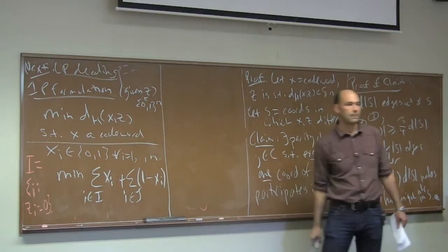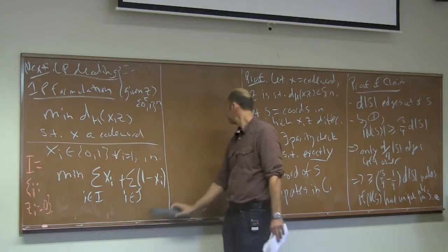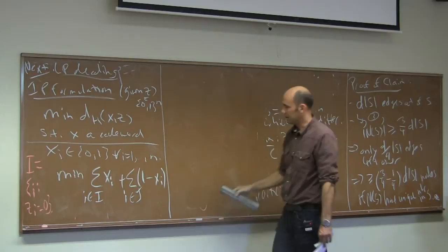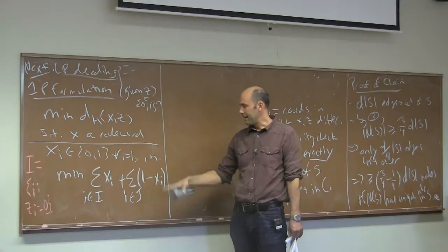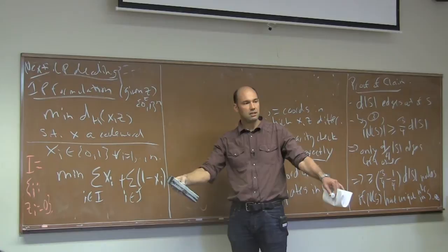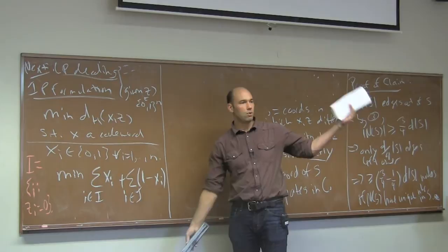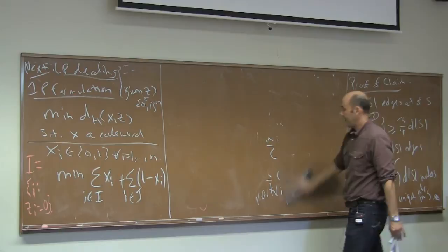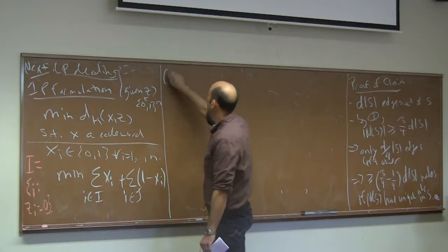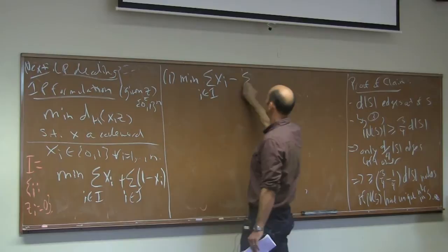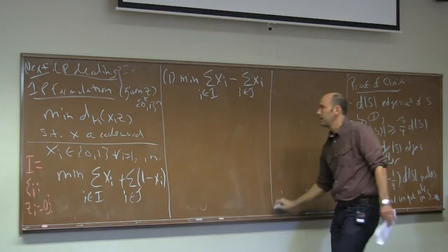It's convenient to simplify the objective. For every feasible solution, the terms involving the one-coordinates contribute exactly |J| to the objective regardless of which code word it is. So dropping that constant, the relative ordering of solutions is unchanged. The final objective function is: minimize the sum of X_i over zero-coordinates minus the sum of X_i over one-coordinates.